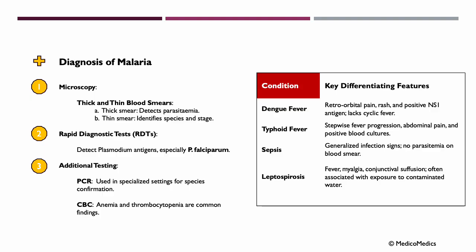For diagnosis of malaria, we do microscopy using thick and thin blood smears. The thick smear will detect parasitemia, while the thin smear helps identify species and stage. We can also do rapid diagnostic tests to detect plasmodium antigens, especially plasmodium falciparum. Additional testing includes PCR, used in specialized settings for species confirmation, and a CBC, where anemia and thrombocytopenia are common findings.